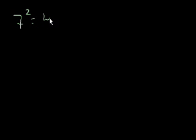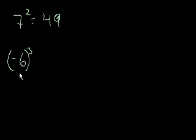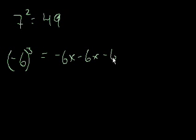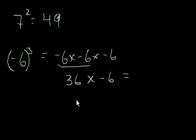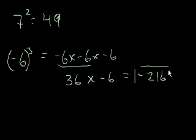If I were to ask you 7 squared, that's 7 times 7, which equals 49. If I asked you negative 6 to the 3rd power — with parentheses around the negative 6 so you know the whole negative 6 is raised to the 3rd power — that equals negative 6 times negative 6 times negative 6. Negative 6 times negative 6 is positive 36, times negative 6 equals minus 216.